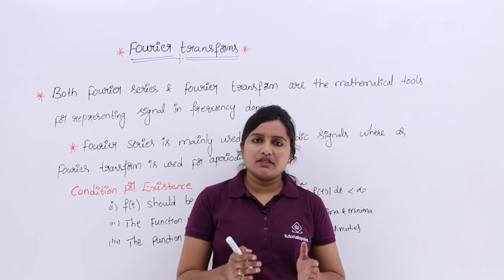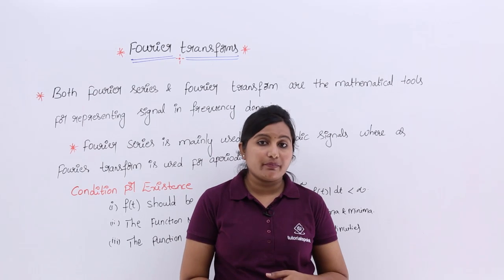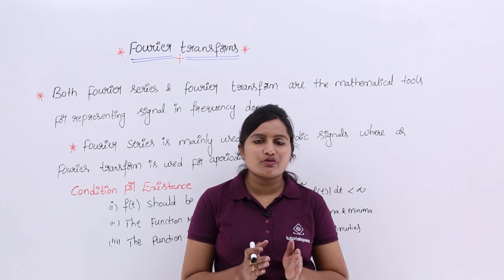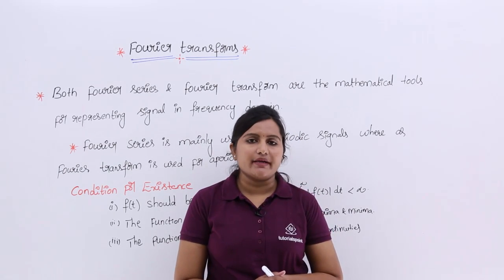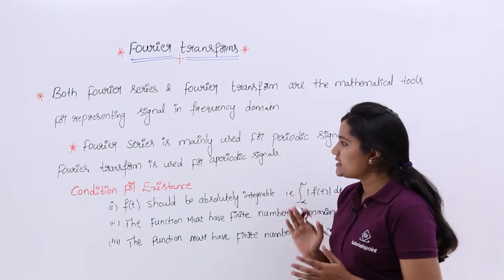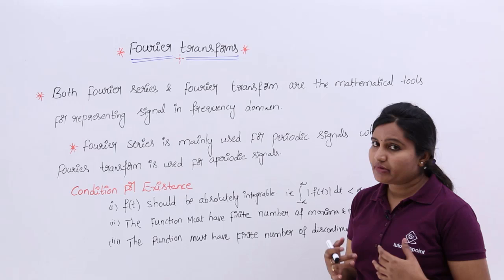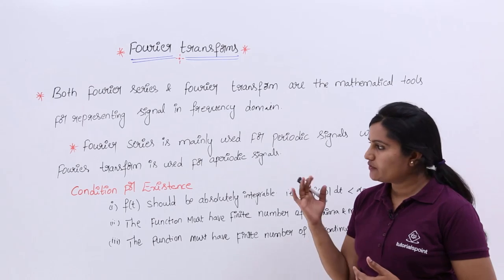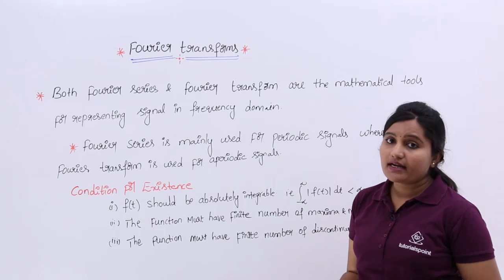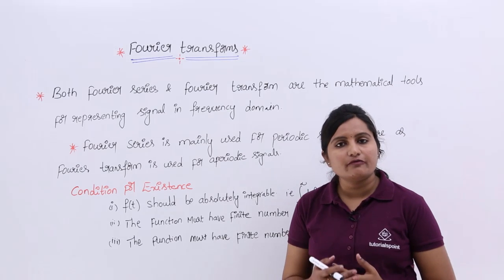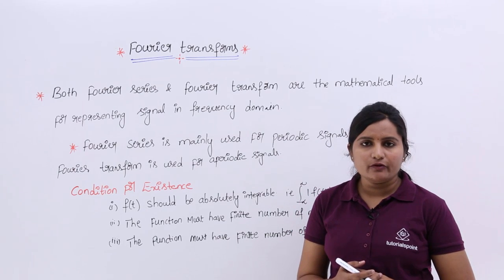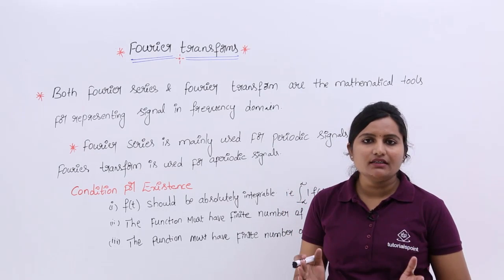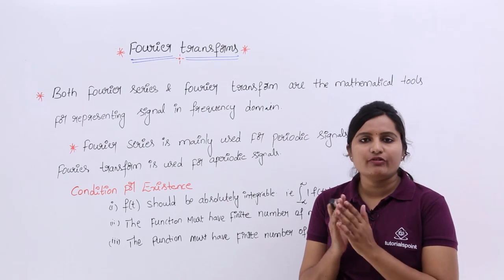Fourier transform is also similar to Fourier series, but it is used for aperiodic signals. Both Fourier series and Fourier transform are mathematical tools to represent any signal in the frequency domain. The only difference is that Fourier series is mainly used for periodic signals. If we are having any aperiodic signal and want a frequency domain representation, then we will go for Fourier transform. The main intention of Fourier transform is to convert a time domain signal into the frequency domain.